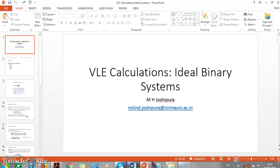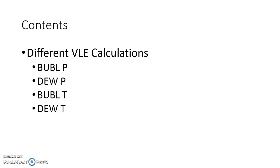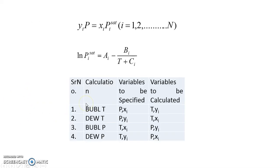We have seen ideal binary system VLE calculation in Part 1 video, where we discussed Bubble P and Dew P calculation. In this video we are going to look at Bubble T and Dew T.